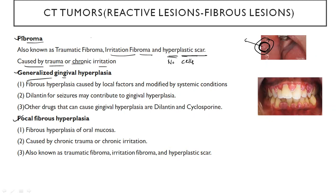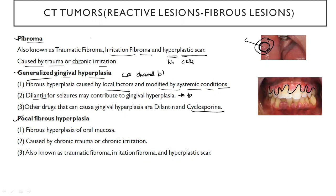Now coming to generalized gingival hyperplasia. Here you can see the hyperplasia is completely all over the mouth. It can be caused because of local factors and can be modified by systemic conditions. It can also be seen due to some drugs — patients who take dilantin or cyclosporine can have gingival hyperplasia. Calcium channel blockers will also lead to gingival hyperplasia. I'll be talking about this in pharmacology, and I can make a small video about drug-induced hyperplasia as well.